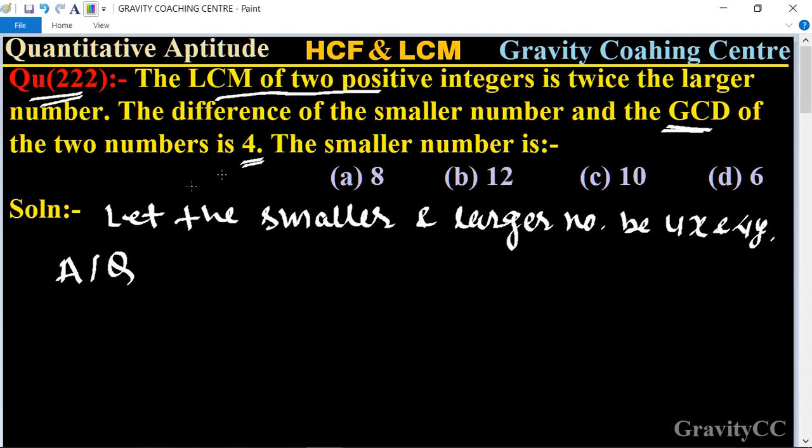According to the question, given that the LCM of two positive integers is twice the larger number, so we can write LCM is equal to twice the larger number. Here larger number is 4y, and the LCM of 4x and 4y is equal to 4 into x into y.